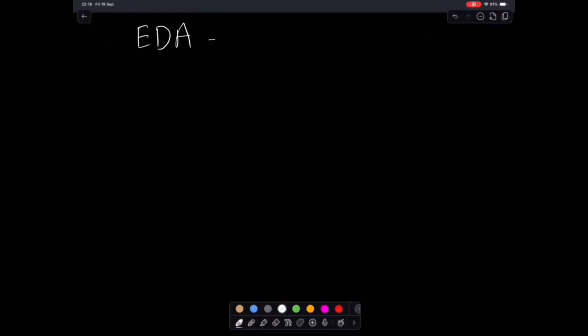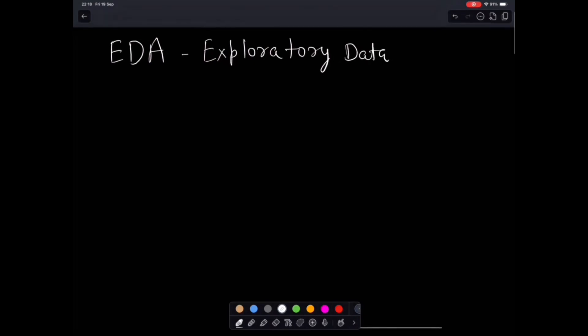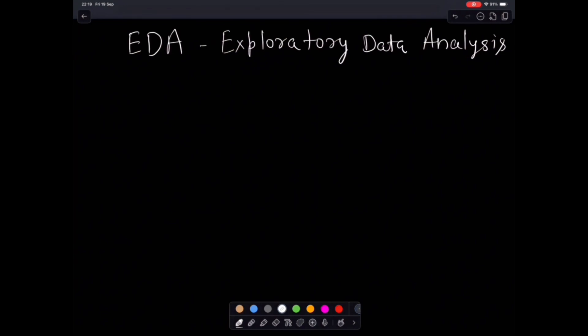Today, we are covering the basics of exploratory data analysis or EDA and why understanding variables is at the heart of it. EDA is basically how we get to know our data, kind of like getting to know someone before trusting them. We want to understand the patterns, spot outliers, detect trends and most importantly, prepare the data for machine learning. Think of yourself like a data detective searching for clues.